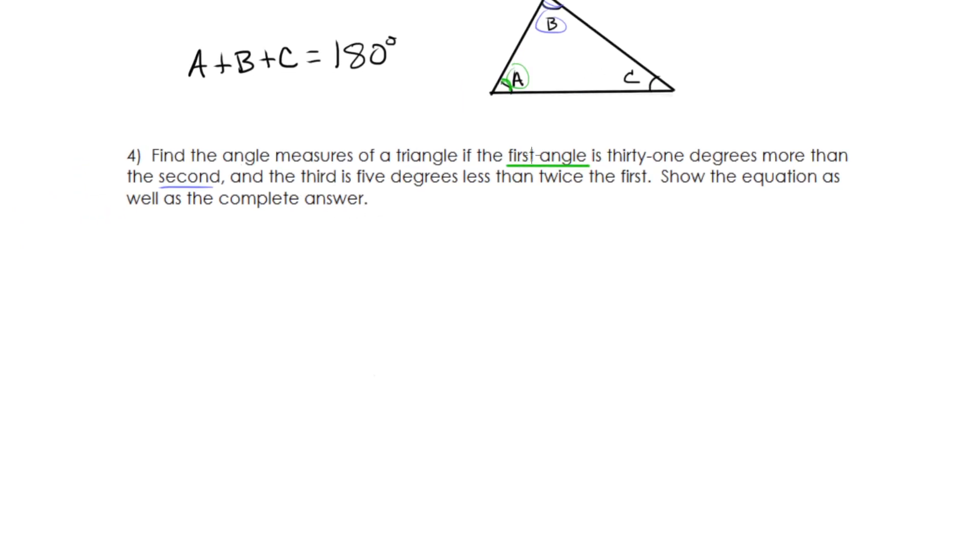So we're going to say this. I'm going to say the first angle A is, because 'is' is equals, 31 degrees more. So I'm just going to write 31. And if it's more, it is a positive 31 than the second angle. So then I'm going to add in the second angle here, B. Alright, so now I have a nice equation right here. I have A equals 31 plus B.